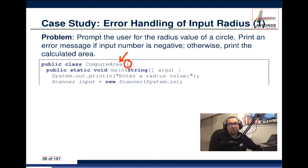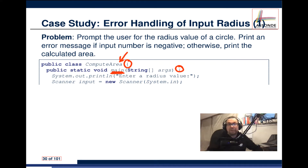This is a public class, and inside the class there is the main method. The main method begins with a print statement that says 'Enter a radius value,' so the user is expected to type in a positive number. We have a Scanner object called input that's created and initialized using the default input object from the Scanner library.